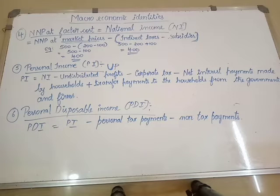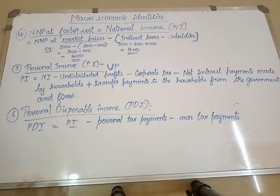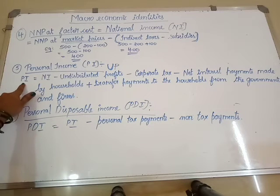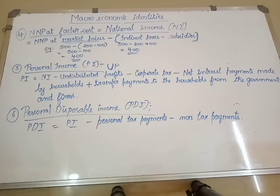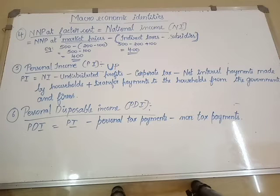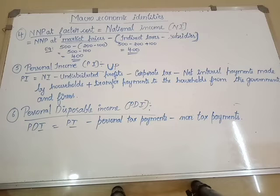Lastly, personal disposable income, or PDI. PDI is the income available at the disposal of the households — that is personal disposable income. So the six macroeconomic identities covered today are: GDP, GNP, NNP, net national product at factor cost or national income, personal income, and personal disposable income.